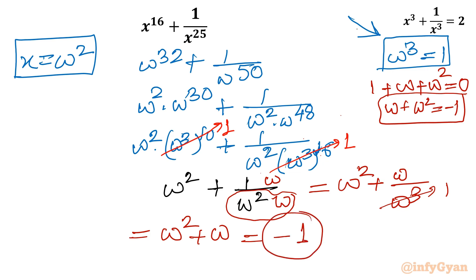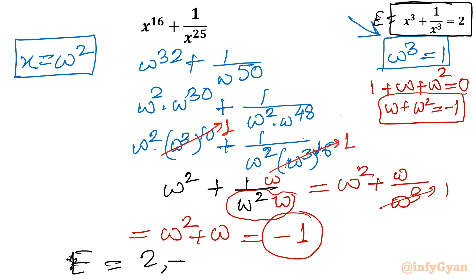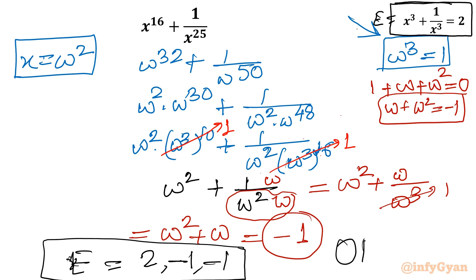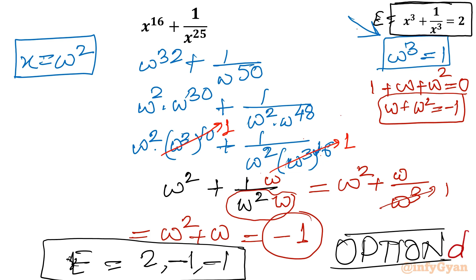Our calculation concludes that the expression E has 3 values corresponding to the 3 solutions: E = 2 for x = 1, and E = −1 for x = ω and x = ω². So E takes values 2 and −1, making option D correct. I hope you liked this video — thank you for watching, don't forget to like, share, and subscribe!